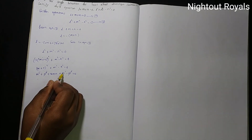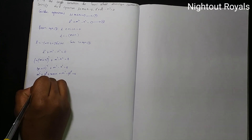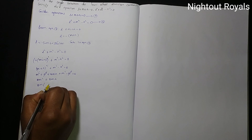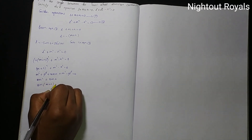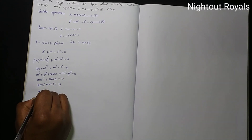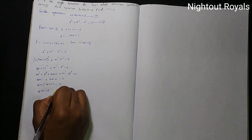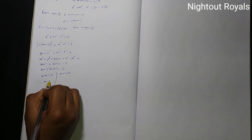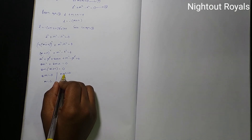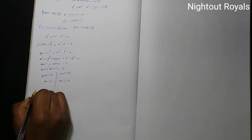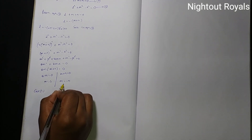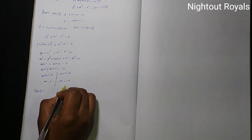Simplifying: 2M square plus 2MN equal to 0, so 2M into M plus N equal to 0. This gives two cases: Case 1 — M equal to 0, and Case 2 — M equal to minus N.